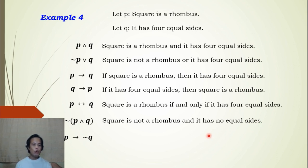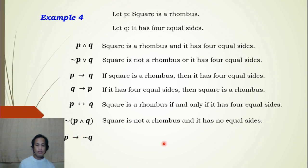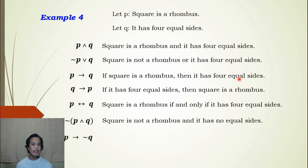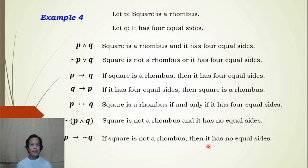The last item is ~p → ~q, where both p and q are negated but this is an implication using the arrow symbol, so this is the negation of the implication. We can write: If square is not a rhombus, then it has no equal sides.